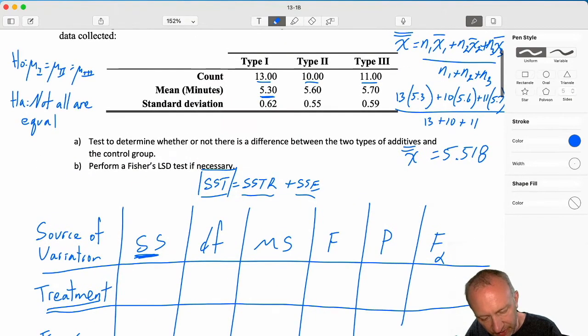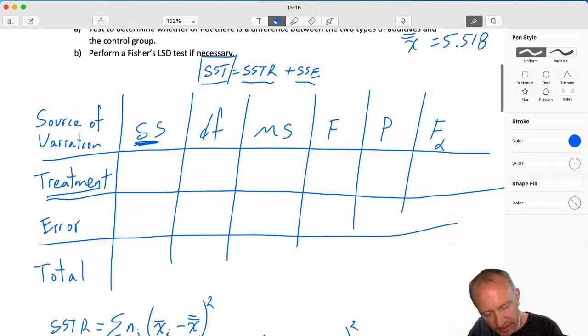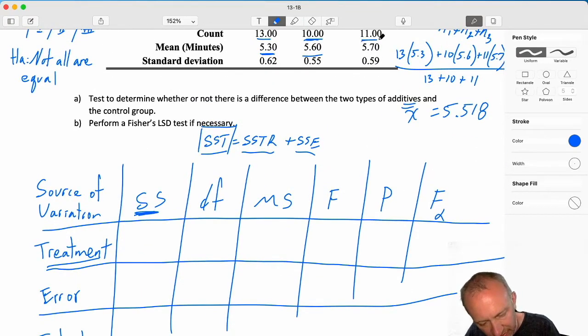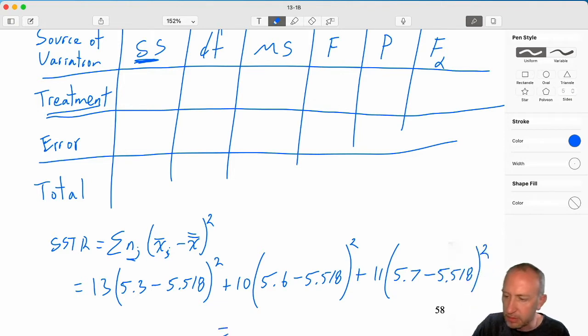Then the next one, our sample size was 10, and our sample mean was 5.6. So 10, 5.6 minus 5.518 squared, plus the next one here was 11, sample mean 5.7, squared. Okay, now we'll figure out what that is.